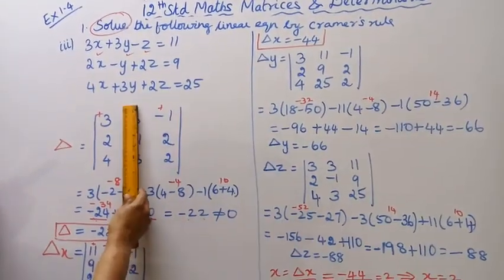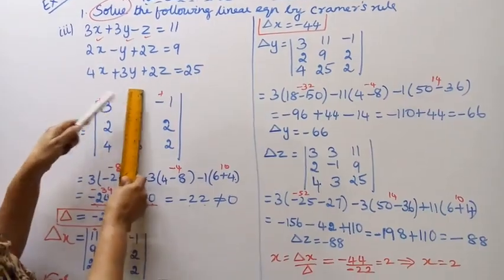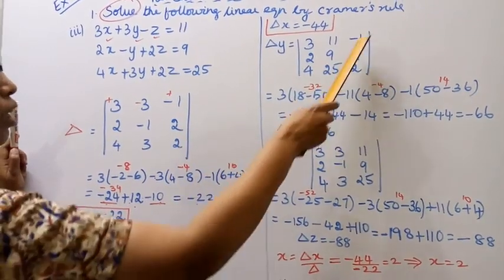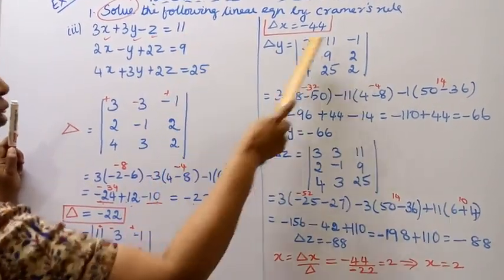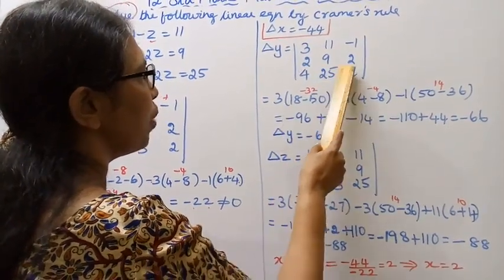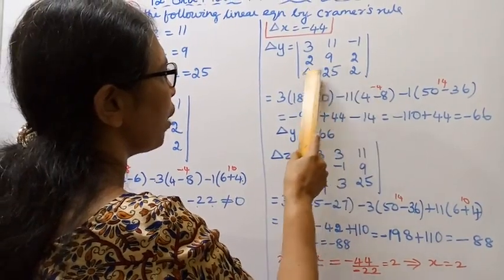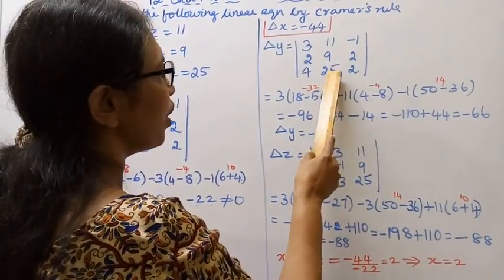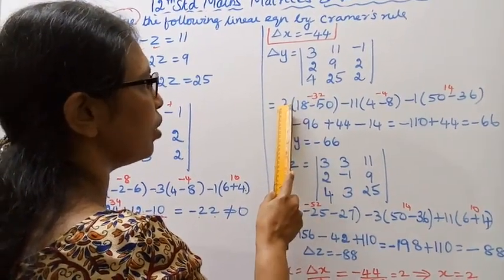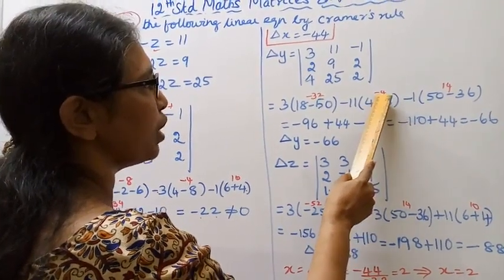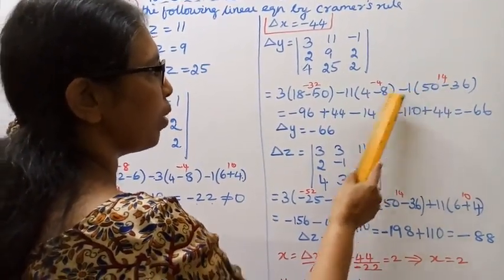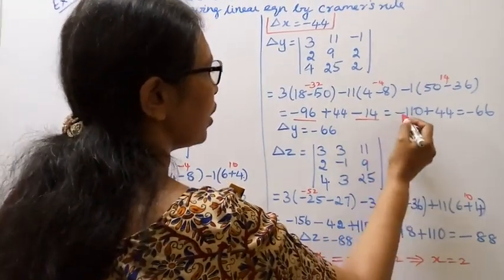Delta y - we take this value and put it in the center: 11, 9, 25; 3, 2, 4; minus 1, 2, 2. This is the determinant. This is plus, this is minus, this is plus. 3 into (9 times 2 is 18 minus 50) minus 11 times (2 times 2 is 4 minus 8) minus 1 times (2 into 25 is 50 minus 4 nines are 36). 18 minus 50 minus 32, minus 32 into 3 minus 96. 4 minus 8 minus 4, minus 4 into minus 11 plus 44. 50 minus 36 plus 14, 14 into minus 1 minus 14. Minus 96 minus 14 minus 110 plus 44, that is equal to minus 66. Delta y equal to minus 66.